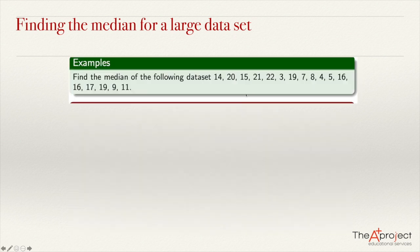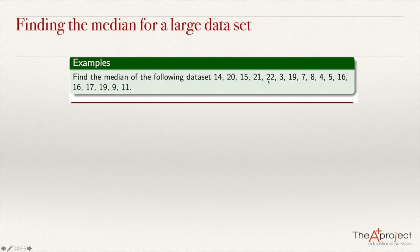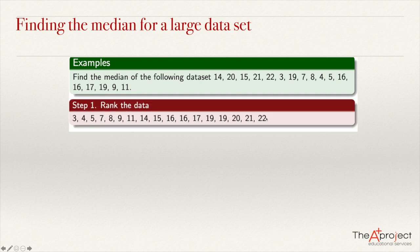Let's see an example. Imagine we have this data: 14, 20, 15, 21, 22, 3, 19, etc. If we want to compute the median, the first step is to order the data from the lowest to the highest. The lowest one is 3 and the highest is 22. So we have ordered the data already — that is the first step.